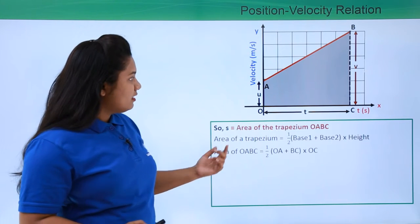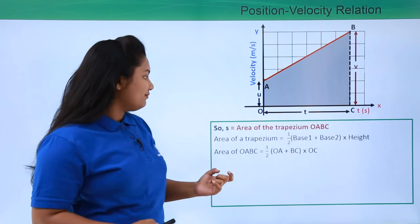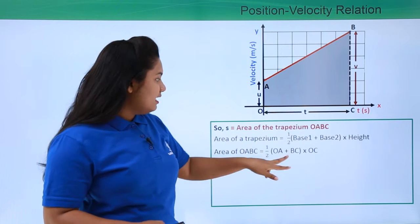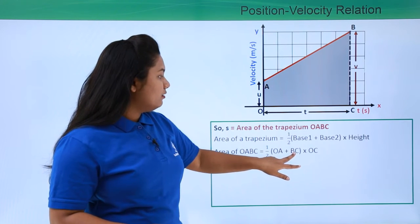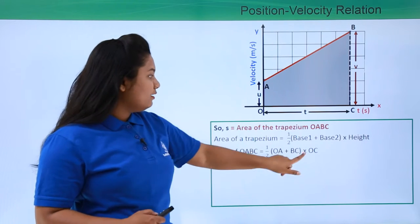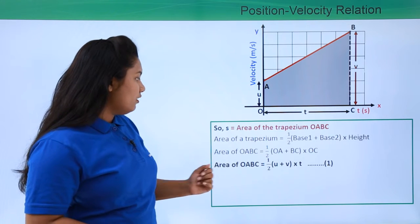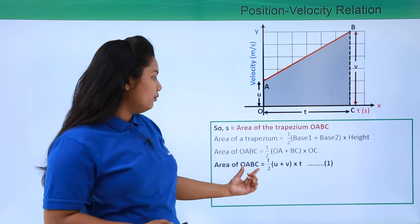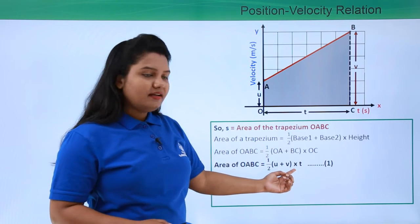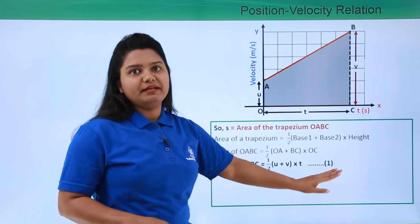Now we substitute all the values. OA is u, which is the initial velocity; BC is v, the final velocity; and OC is t, the time taken. So the area of OABC equals half into (u + v) into t. Let us call this equation number one: s = (u + v)t / 2.